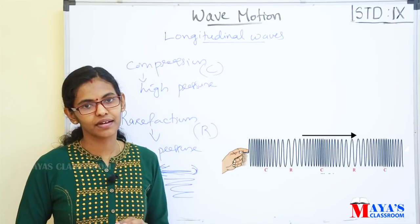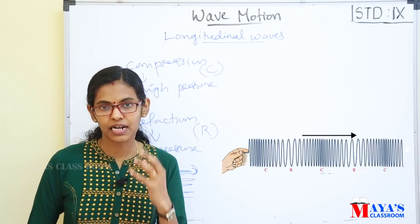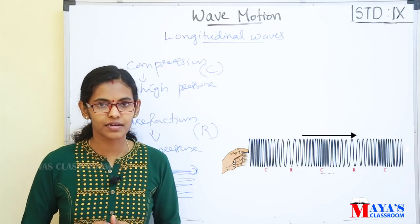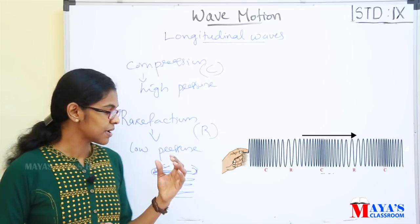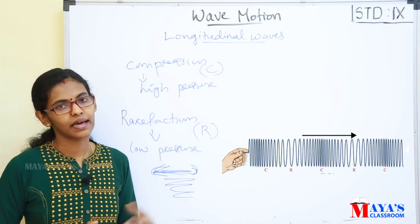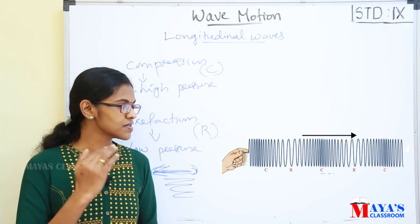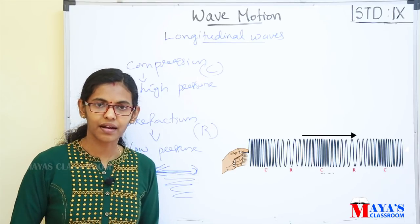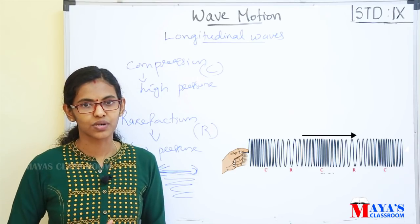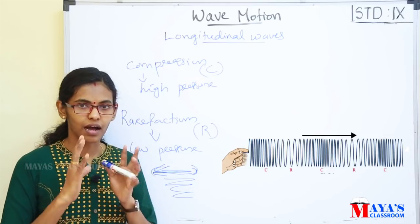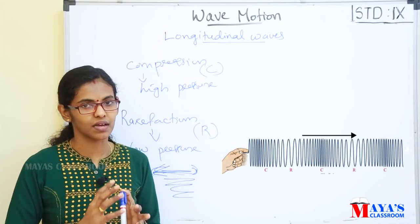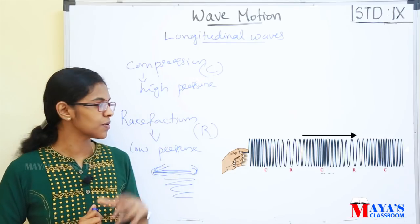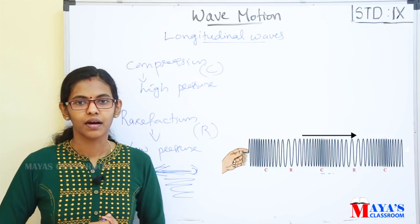When waves are perpendicular to the vibration, it is transverse — it has a crest and a trough. In longitudinal waves, the vibrations are parallel to the direction of the waves. We call the high pressure area the compressed area, and the low pressure area we call rarefaction.